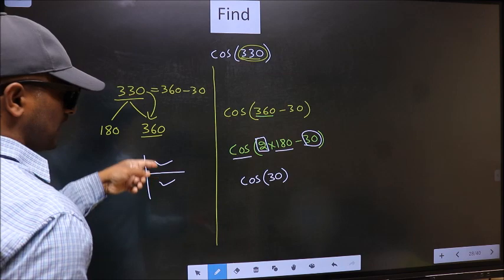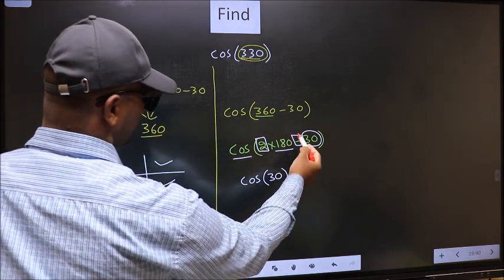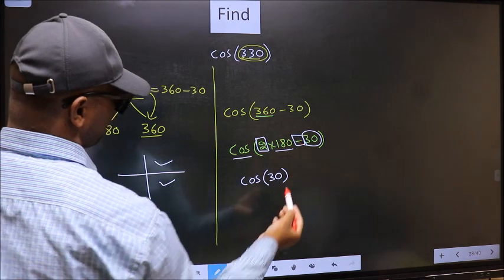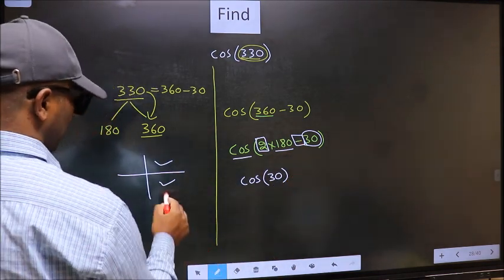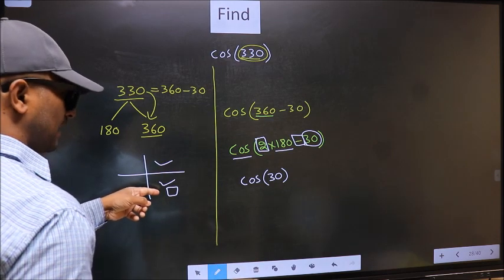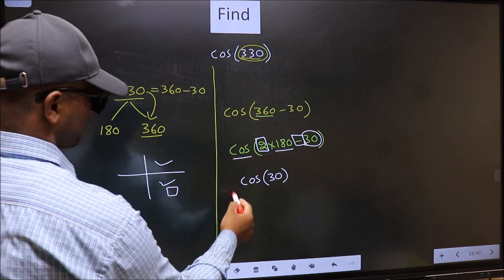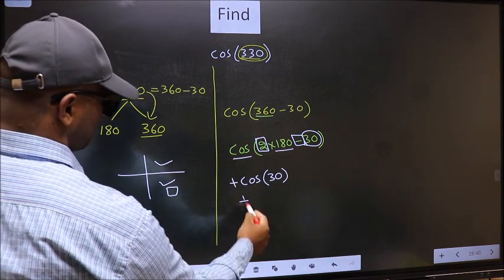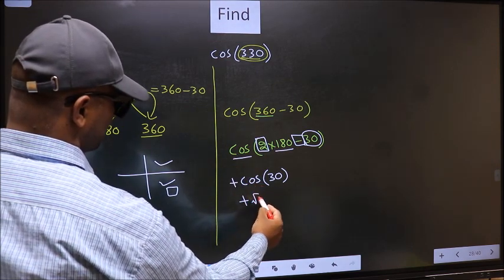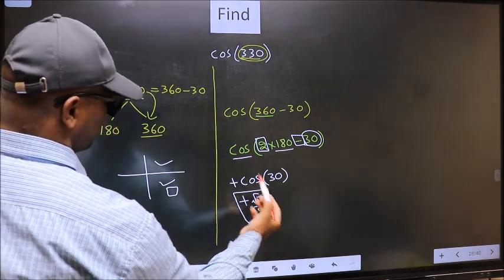So now to select the quadrant, we should look at this symbol. Here we have negative. That means the angle lies in the fourth quadrant. And in the fourth quadrant, cos is positive. So we should put plus. So plus cos 30 is root 3 by 2. This is our answer.